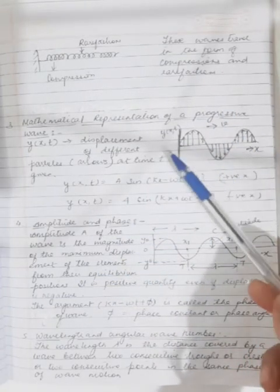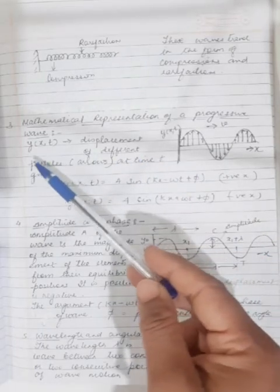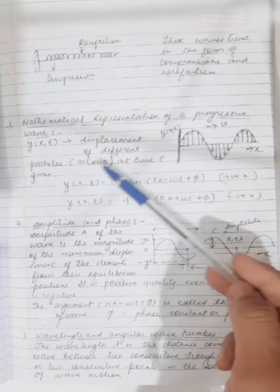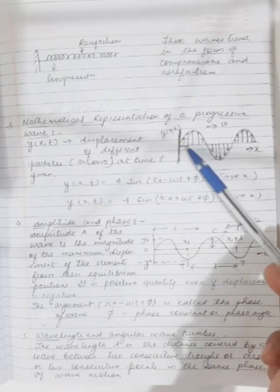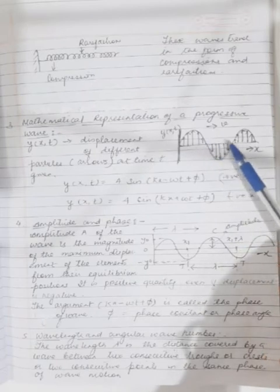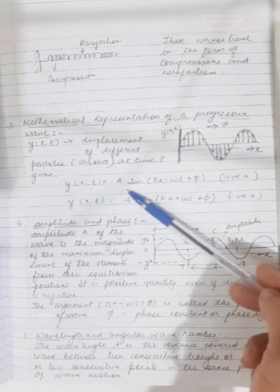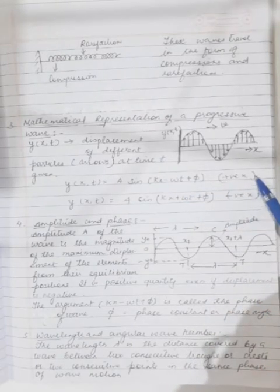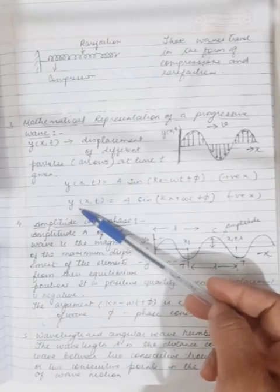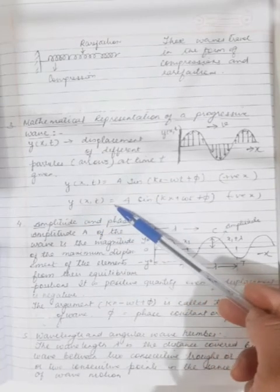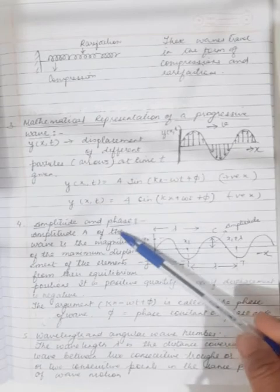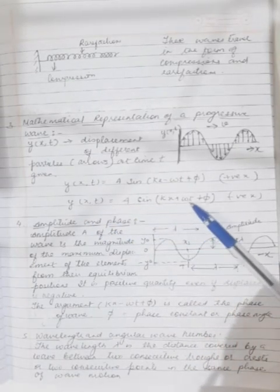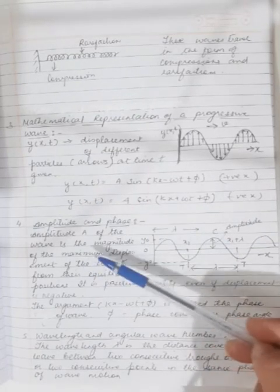Next is how we can mathematically represent a progressive wave. A progressive wave can be represented as y(x,t), which is the displacement of different particles at time t. In the positive x direction: y(x,t) = A sin(kx − ωt + φ), and in the negative x direction: y(x,t) = A sin(kx + ωt + φ).